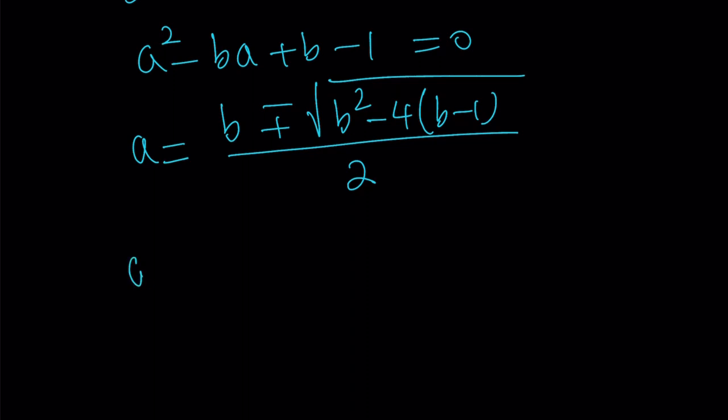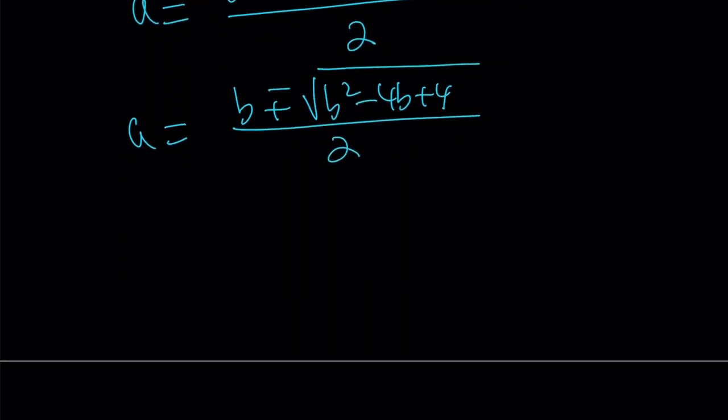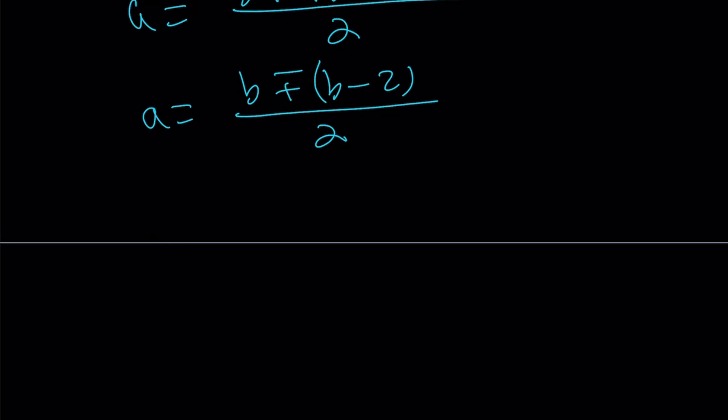So, now from here, we're going to get b plus minus the square root of b squared minus 4b plus 4. Does that look familiar? Here, that is b minus 2 quantity squared. Therefore, with the plus minus sign, we can write this as b minus 2. But let's keep the parentheses for minus sign. And from here, you're going to get something interesting.